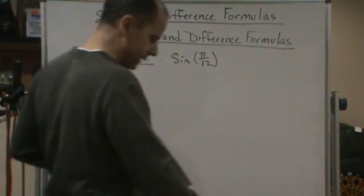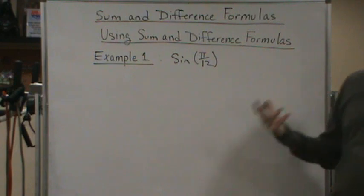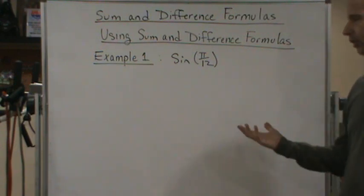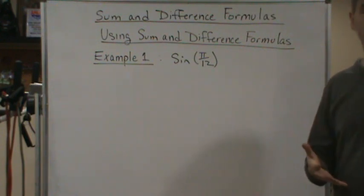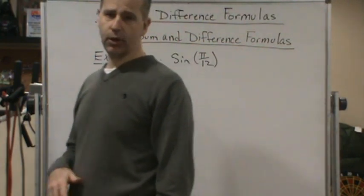Okay, welcome back, and now let's do example one. We're going to use sum and difference formulas to find the exact value for trigonometric functions given angles that aren't ones that we know. They're not those typical angles that we know from the unit circle, right?